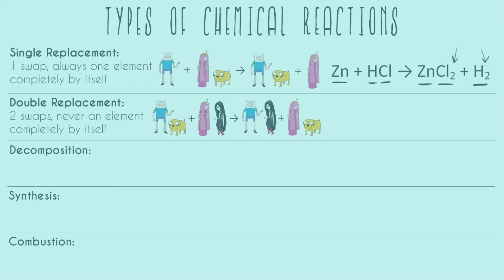Now let's look at the chemical version. We have iron and sulfur with hydrogen and chlorine, and then the swap happens: now iron is with chlorine in our products, and hydrogen is with sulfur. Whatever it was in the reactants, it's not there in the products.